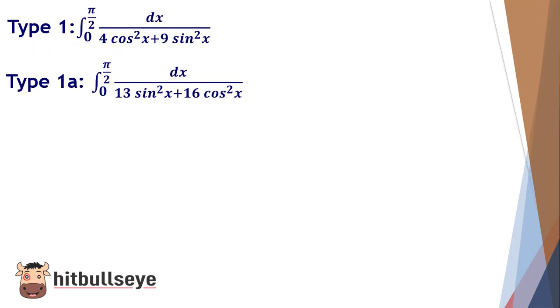This type of question has limits ranging from 0 to π/2 with expressions like dx/(4cos²x + 9sin²x). Similarly, the second type has limits from 0 to π/2 with dx/(13sin²x + 16cos²x).